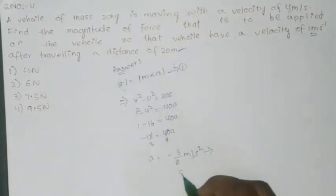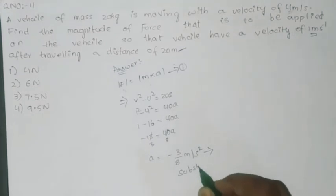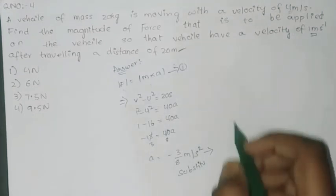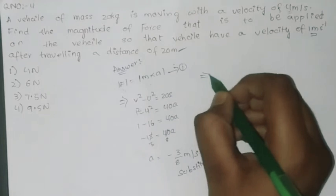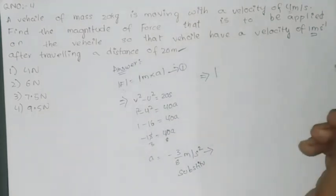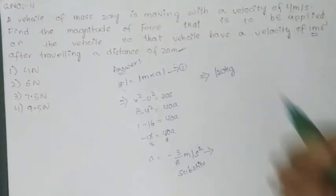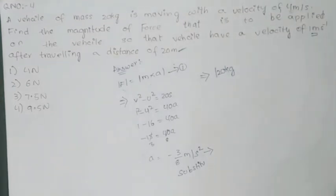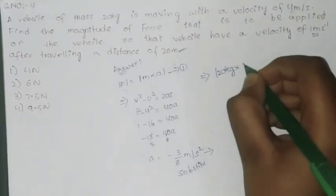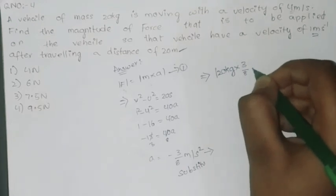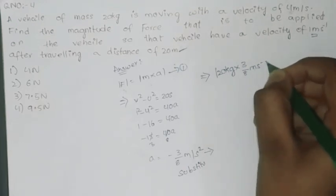Substitute this value in equation 1. Then m means 20 kg is given in the question, times - in mod means there is no negative values - 3 by 8 meter per second squared.